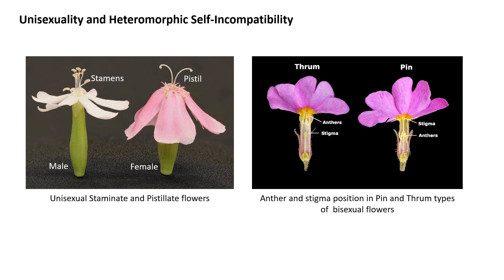In bisexual flowers, self-incompatibility may be expressed as a spatial separation of anthers and stigma within the hermaphrodite or bisexual flower. Thrum plants have short styles and long stamens with anthers reaching above the stigma. Pin plants have long styles and short stamens with anthers located below the stigma. The control of this heteromorphy of the stamens and pistil is genetically controlled by a locus called the S locus, which shows highly polymorphic alleles. Thrum plants are heterozygous, with capital S and small s alleles of the S locus, and pin plants are homozygous recessive, with small s and small s alleles.